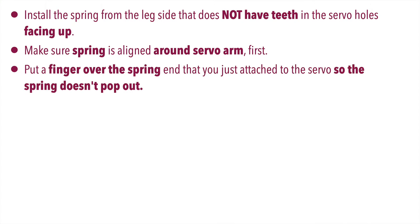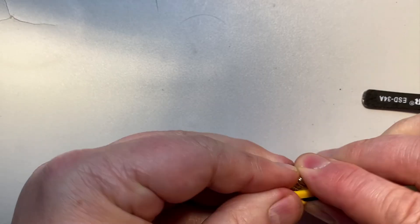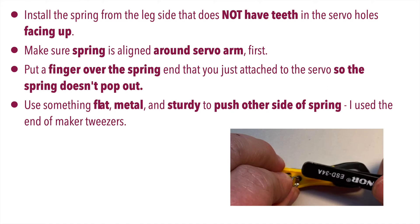Next, put a finger over the spring end that you just attached to the servo, so that that end of the spring doesn't pop out. Next, use something flat and metal and sturdy to push the other side of the spring in.